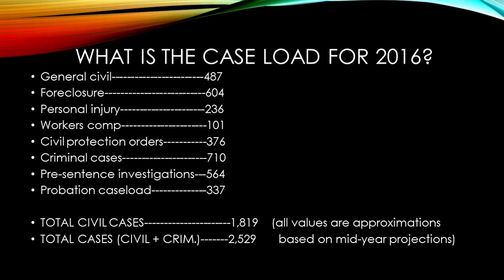These are rough approximations — we took some numbers in the middle of the year and doubled them. We still have a large number of foreclosure cases, about half of what it was during the foreclosure crisis. We actually have more contract cases than personal injury cases. Civil protection orders — lots of those. There are people doing things to their neighbors, friends, family, ex-partners that they really shouldn't be doing. I like to think of civil protection orders as preventive law — we try to make sure circumstances don't get out of hand, that people are not harmed, that everybody lives in peace. The criminal docket is about this size, divided amongst our four judges. So we've got a lot of cases — a wide range of criminal and civil matters — all handled in the General Division.